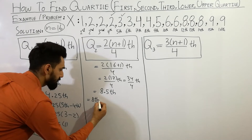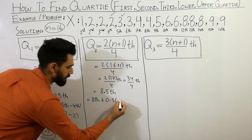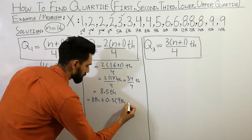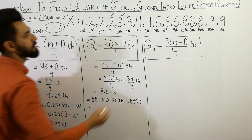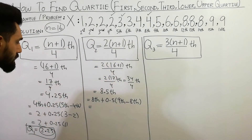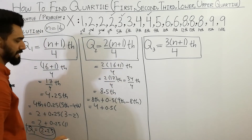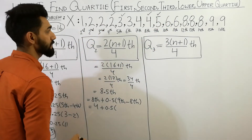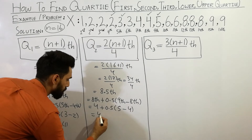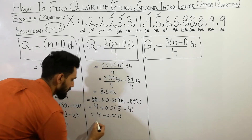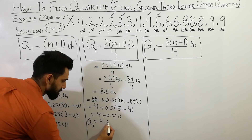You can write here: 8th term plus 0.5 bracket (9th term minus 8th term). The 8th term is given here as 4, and the 9th term is given here as 5. So: 4 plus 0.5 times (5 minus 4) equals 4 plus 0.5, giving Q2 = 4.5.